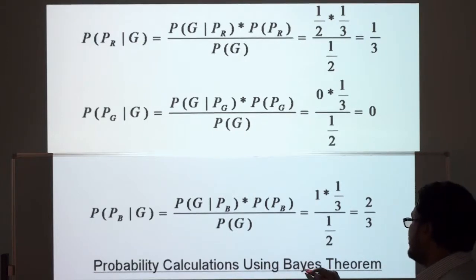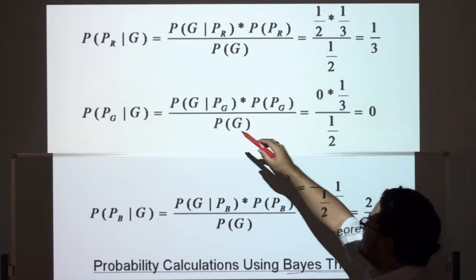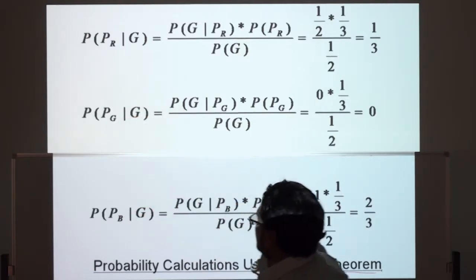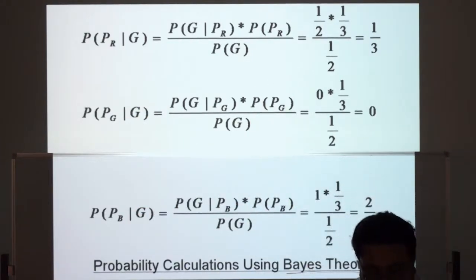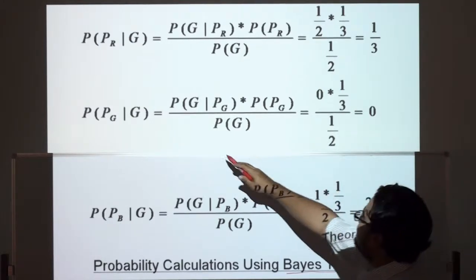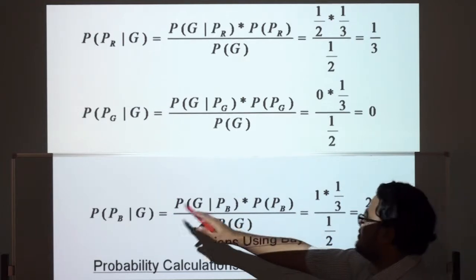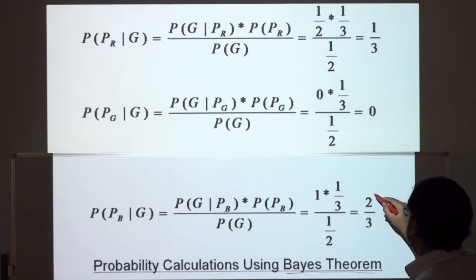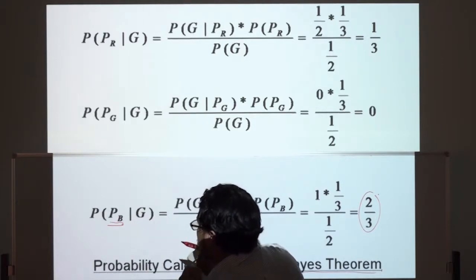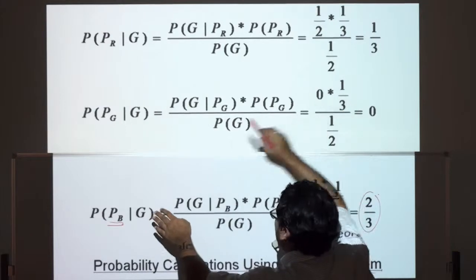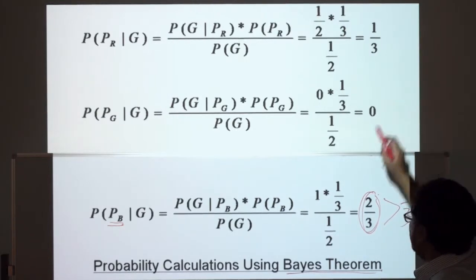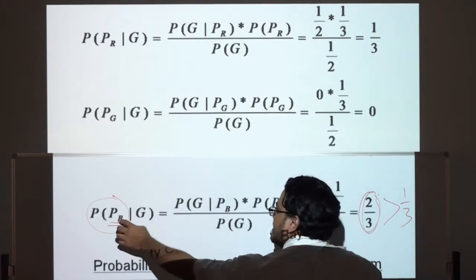Using Bayes' theorem, we look at each scenario given the host opening the green door: the probability of the car being in the red door is one-third, the probability of it being in the green door is zero — we know that because he opened the green door — and the probability of it being in the blue door is two-thirds. So there's a better chance of the car being in the blue door given that the host opened green. Two-thirds is greater than one-third.